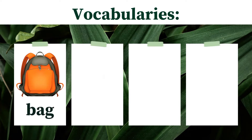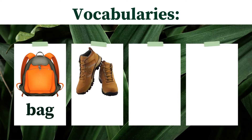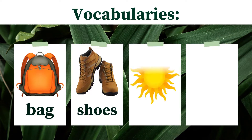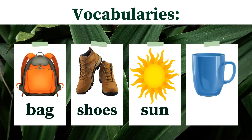It's called a bag — and its color is orange, good job. We also have this one — how do you call this one? They are called shoes, very good. What about this one? Good job, it's the sun. And we also have a cup — can you say that again? Cup.